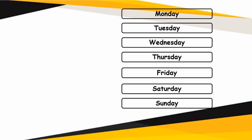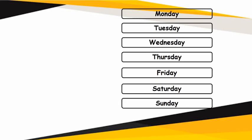Let us move on to the next one. Today is Tuesday because both of them are red in color. So if today is Tuesday, which day was yesterday? Yesterday is in blue. Which day can you see in blue in the weekdays? You can see Monday in blue. So yesterday it was Monday. And tomorrow, which day will it be? Tomorrow is in green. Which day is there in green? Wednesday. So if today is Tuesday, yesterday it was Monday and tomorrow it will be Wednesday.